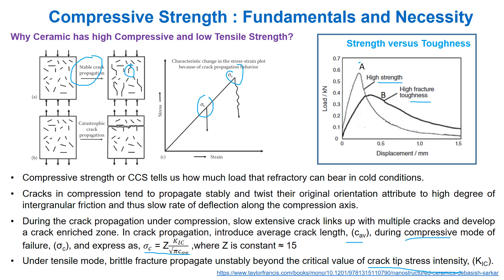Stable crack propagation enhances fracture toughness. Consider two systems: if a crack propagates abruptly, that is failure; but if a crack follows a tortuous path, it has high fracture toughness. This stable crack propagation can be achieved through different toughening mechanisms to achieve both high strength and toughness simultaneously.